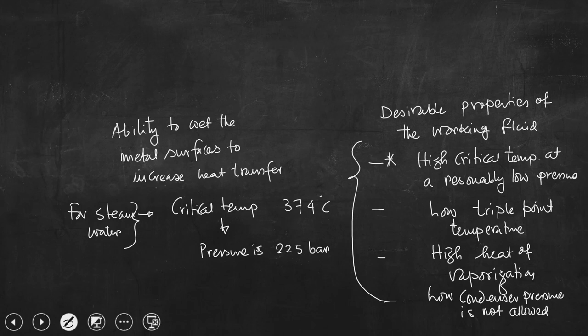At 374°C the pressure is 225 bar. Try to understand: if we use water as the working fluid and that water is converted into steam in the boiler, even at the critical temperature the pressure is very high. To withstand that high pressure, the design of the device, its operation, and control will be issues. These three important aspects — design, operation, and control — are the factors for which we should look for a fluid with high critical temperature at a reasonably low pressure.